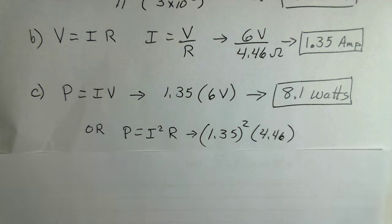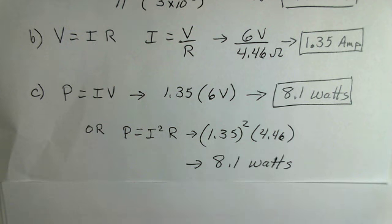Another way to calculate if the material is ohmic material, obeys Ohm's law, then power equals the square of the current multiplied by the resistance. We found the current, 1.35 amps. We square that. We multiply it by the resistance that we found earlier, 4.46 ohms. Again, we get 8.1 watts.